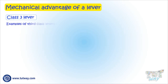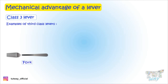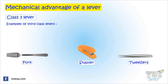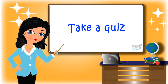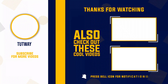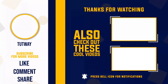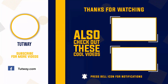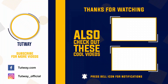Examples of third-class levers include a fork, a stapler, and a tweezer. Today we learned a lot about the mechanical advantage of various types of levers. Now go ahead and take a quiz to learn more. Bye-bye! Don't forget to like, comment, and share this video. If you want to see more fun videos, hit that subscribe button. You can also follow us on Facebook and Instagram for more content.